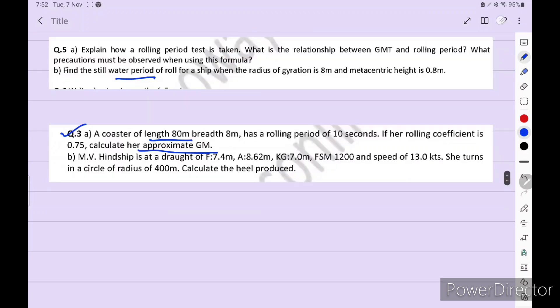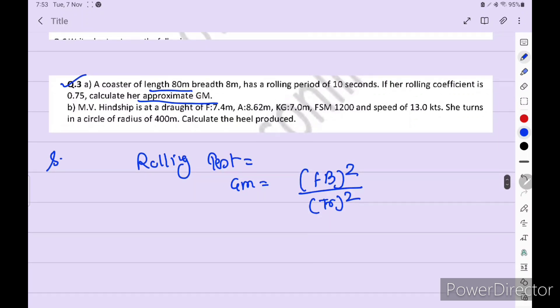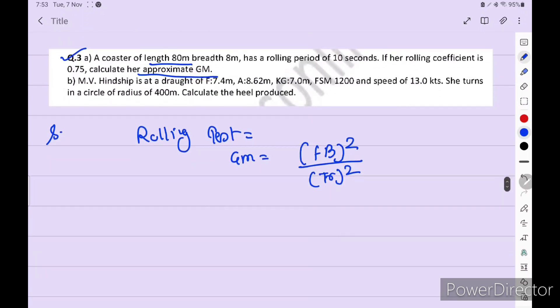Let's solve this type of numerical. If this type comes, the formula is rolling test: GM equals FB squared divided by TR squared. You can remember this formula by Facebook square divided by training square.